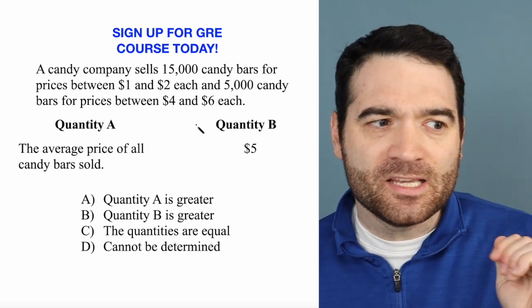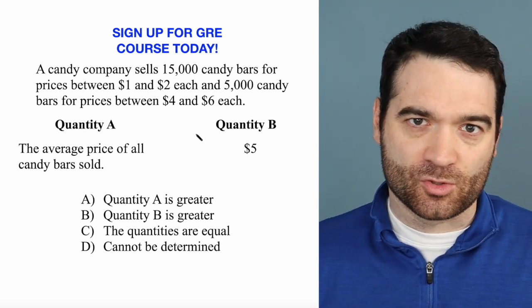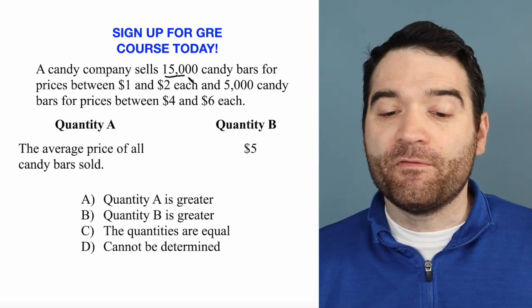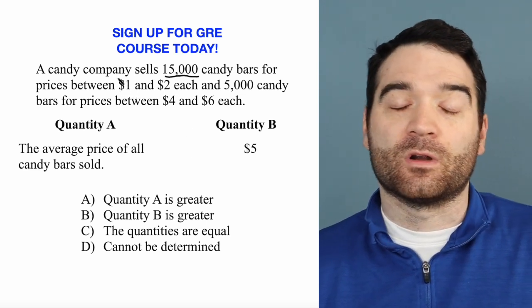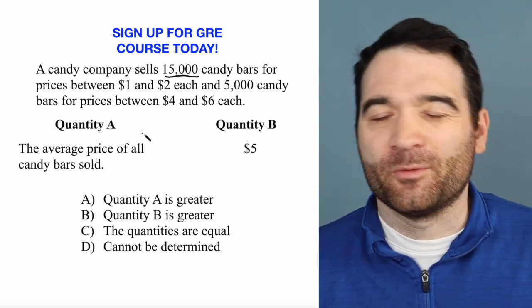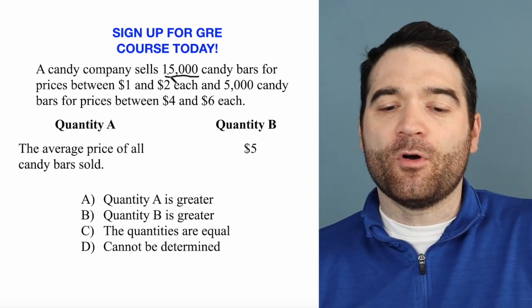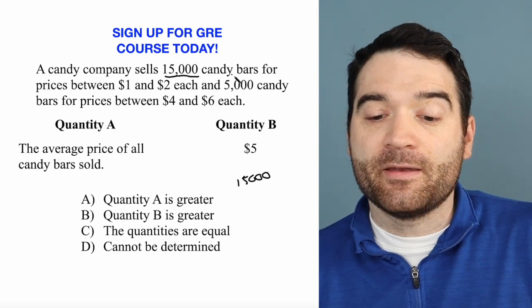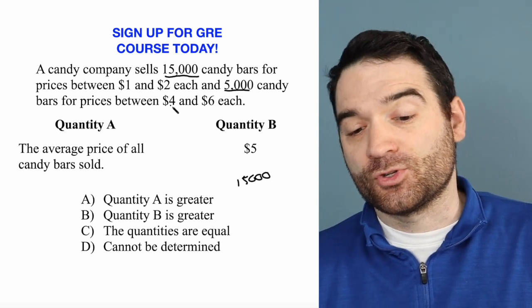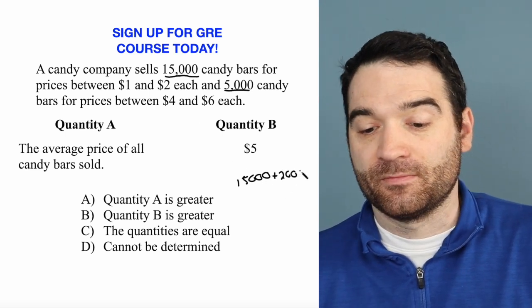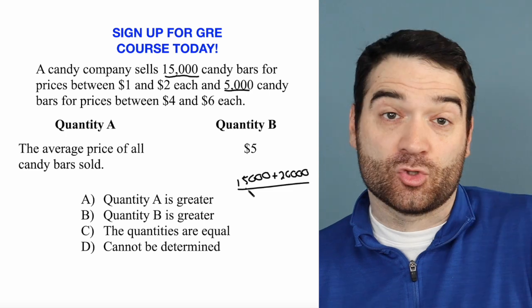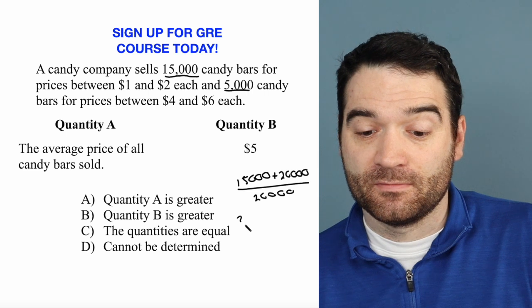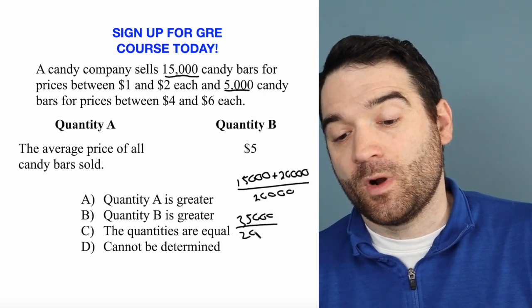Here's what I'm going to do. Let's consider the minimum possible value we could have sold the bars at. So let's say all 15,000 candy bars were sold for $1 — that's $15,000. And to minimize this, 5,000 were sold at $4 each, so that's $20,000. So that's $15,000 plus $20,000, which is $35,000, divided by 20,000 total candy bars.